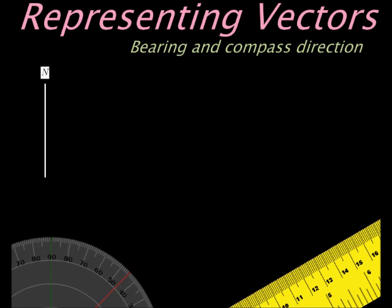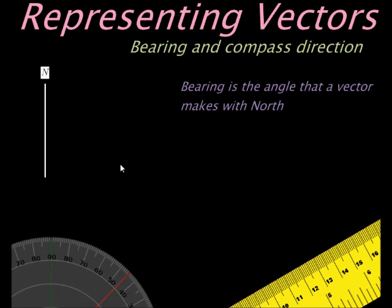Let's have a look. Bearing is actually the direction or the angle that a vector makes with North. So if I had to go and measure the bearing of a vector, let's imagine any vector. Let's say we have this vector from here to there, make it a bit thicker. There we go, that vector.